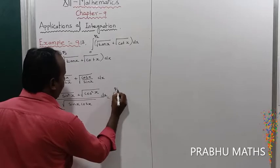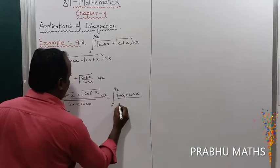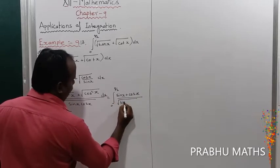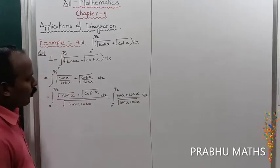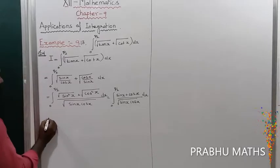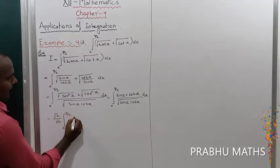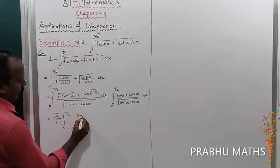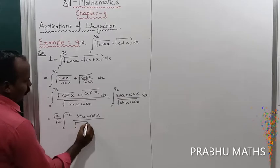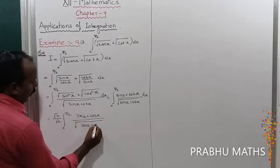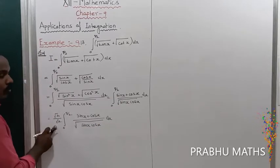The numerator simplifies — the square roots cancel — giving (sin x + cos x) / √(sin x cos x). Next, we multiply numerator and denominator by √2, giving √2/√2 · ∫₀^(π/2) (sin x + cos x) / √(sin x cos x) dx.